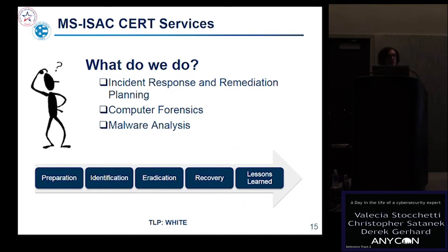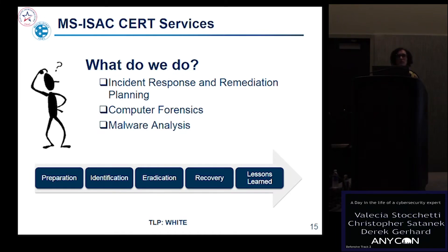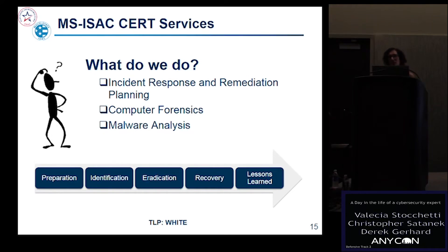As a Computer Emergency Response Team, we have three main functions: incident response and remediation planning, computer forensics, and malware analysis. There are five steps in incident response, and a lot of times people miss the very first step — which is the most important in my opinion — and that's preparation. In order to be prepared, you first need an inventory of what's in your infrastructure: what software applications and hardware you have. Otherwise, how can you protect what you're trying to protect?